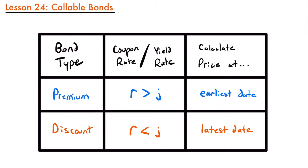Welcome back. Today we're going to be talking about callable bonds. Sometimes when bonds are issued, the issuer will give a range of dates where the bond can be redeemed. When a callable bond is purchased, the issuer and the purchaser do not know when the bond will be redeemed, but they agree upon a set of dates where it could be redeemed. The actual date of redemption is chosen at a later time.